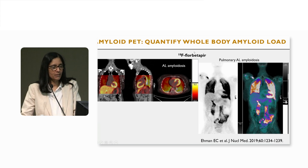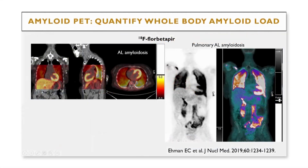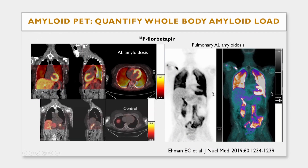Here is F-18 florbetapir — an example of a patient with cardiac and pulmonary uptake. At the bottom is a control study showing no significant myocardial uptake. This tracer is excreted through the hepatobiliary system, so the liver activity is physiologic.